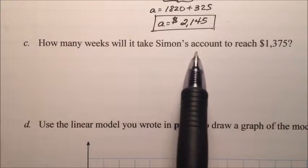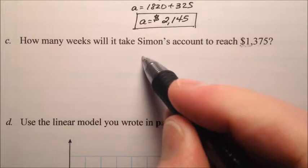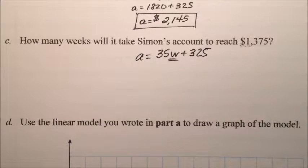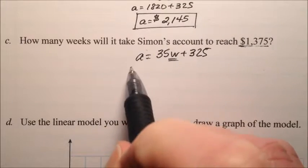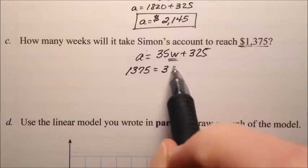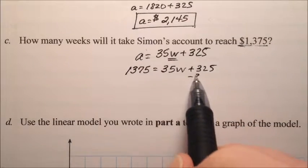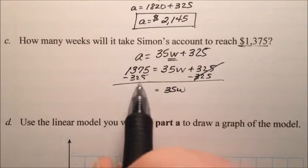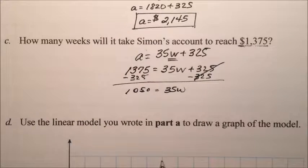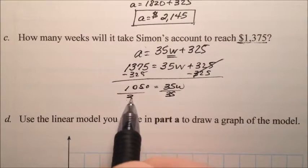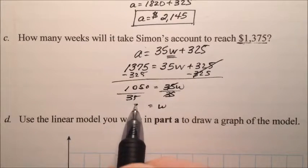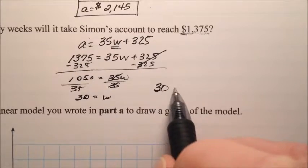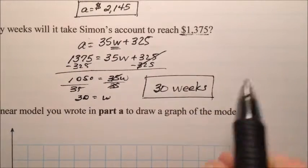Part c asks how many weeks will it take Simon's account to reach $1,375? We start with our A equals 35W plus 325. We're looking for weeks, so we need a value for A, which we have, 1375. So 1375 equals 35W plus 325. We can subtract 325 from both sides, and this 35W will be by itself. Over here we should get 1050. When we divide both sides by 35, those cancel, and our W is 30. Since it's W, it's the number of weeks, so the answer for this one is 30 weeks.